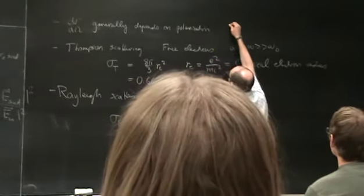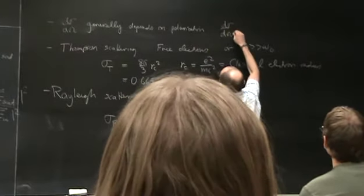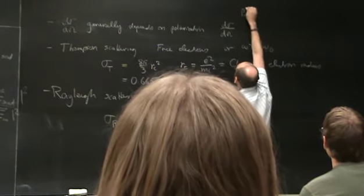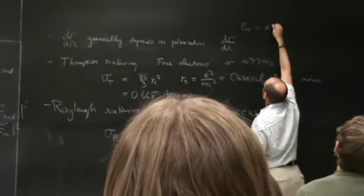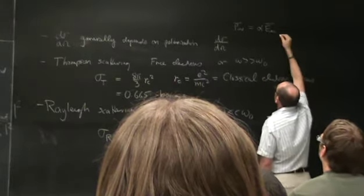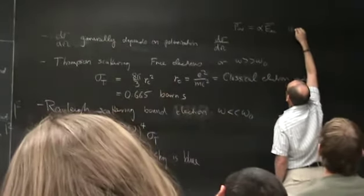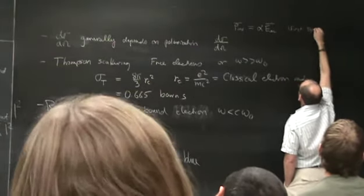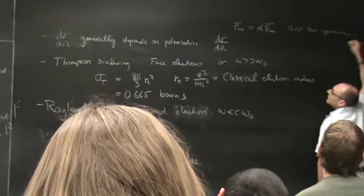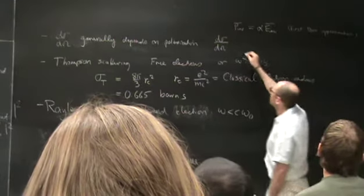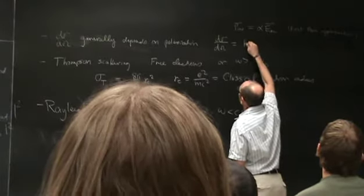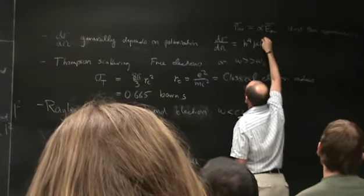When we wrote this out, with the induced dipole moment written as proportional to the incident field — which we'll put more formally as the first-Born approximation — then plugging in, we get k to the fourth times alpha squared times the perpendicular component.